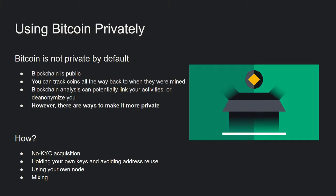The Bitcoin blockchain is public — anyone can see the source of funds, the amount being sent, and the destination for every single transaction, going all the way back to the beginning. Bitcoin is pseudonymous, which gives you a weak bit of privacy since your name isn't attached to each transaction. But chain analysis can correlate your activity with other information — like IP addresses and accounts on Bitcoin-related platforms — in order to de-anonymize you. There are ways to make your experience more private with Bitcoin, and that's what we'll be discussing. Broadly, those methods are: no-KYC acquisition, holding your own keys, avoiding address reuse, using your own node, and mixing your coins.